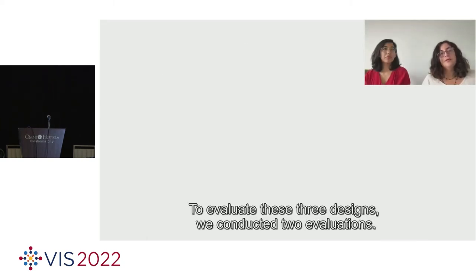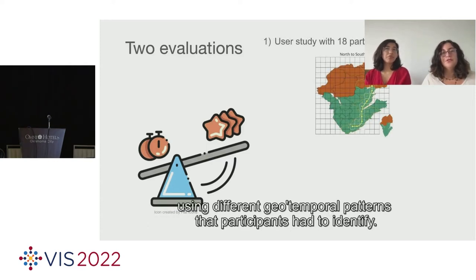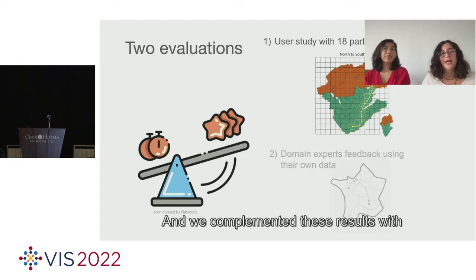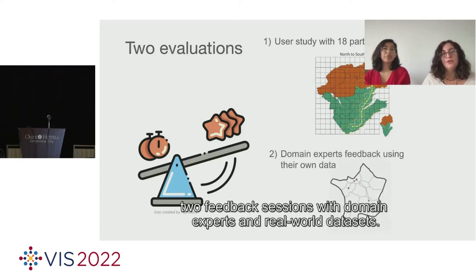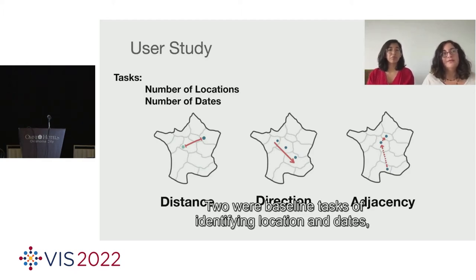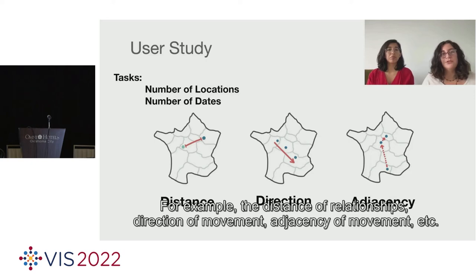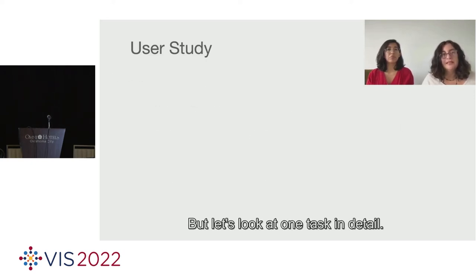To evaluate these three designs, we conducted two evaluations. First, we ran a user study with 18 participants using different geotemporal patterns that participants had to identify. We complemented these results with two feedback sessions with domain experts and real-world datasets. In our user study, we compared the three designs using five tasks. Two were baseline tasks of identifying location and dates, and three were tasks that focus on geospatial patterns. For example, the distance of relationships, direction of movement, adjacency of movement.